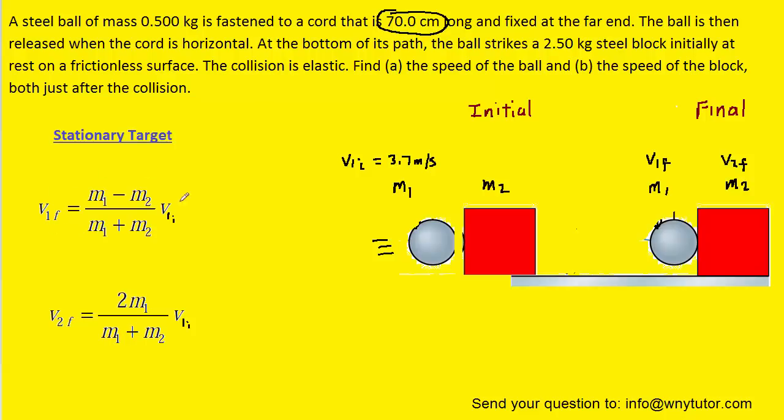So let's take a look at those two equations. In the first equation, we can calculate the final velocity of object one. And then in the second equation, we can calculate the final velocity of object two. Notice again that these are only going to work when the second object, the target so to speak, is stationary.